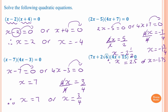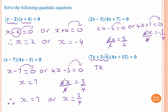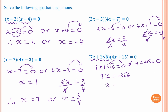Next one: 7x plus 2 root 6 times 4x plus 5 equals zero. So 7x plus 2 root 6 equals zero, or 4x plus 15 equals zero. Moving 2 root 6 to the other side gives 7x equals negative 2 root 6. Dividing by seven gives x equals negative 2 root 6 over 7.